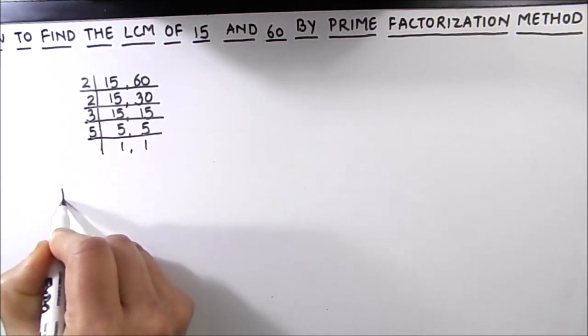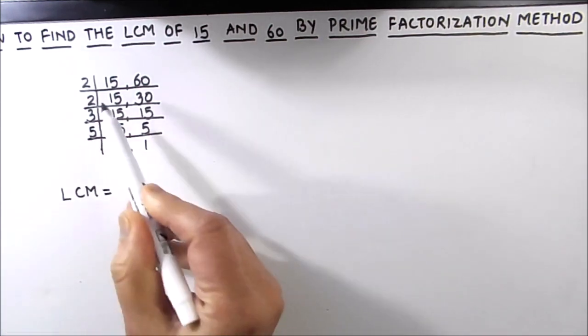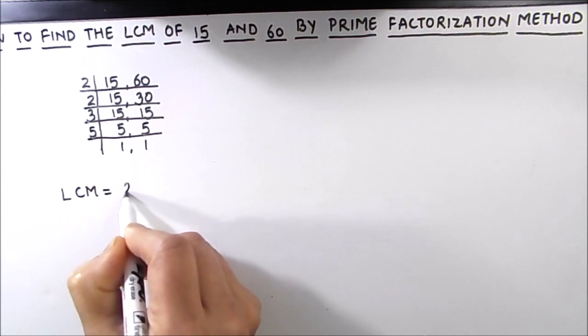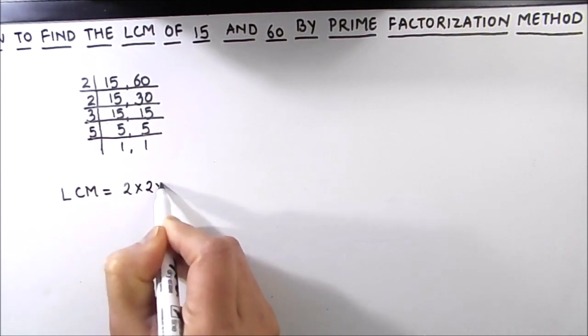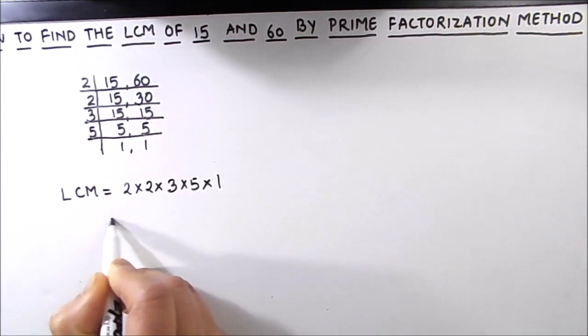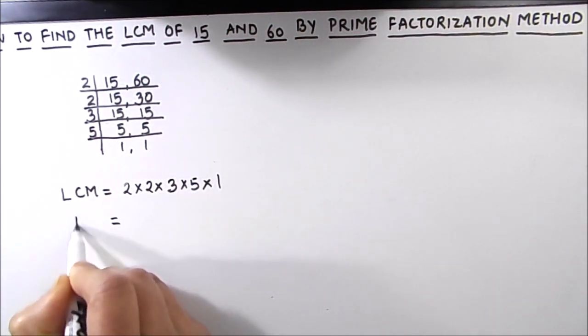Now for finding the LCM, we are going to take the product of all the numbers on the left-hand side of the ladder. So 2 times 2 times 3 times 5 times 1 is the LCM of the two numbers, which is equal to...